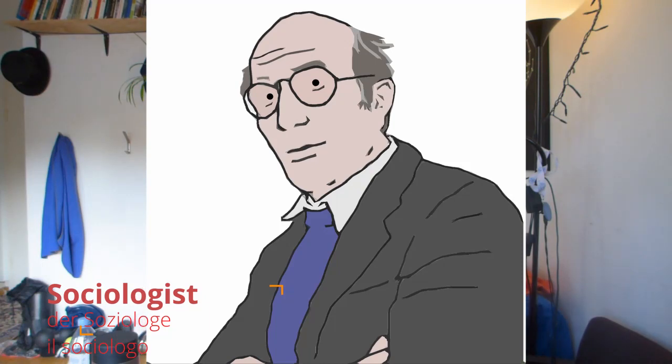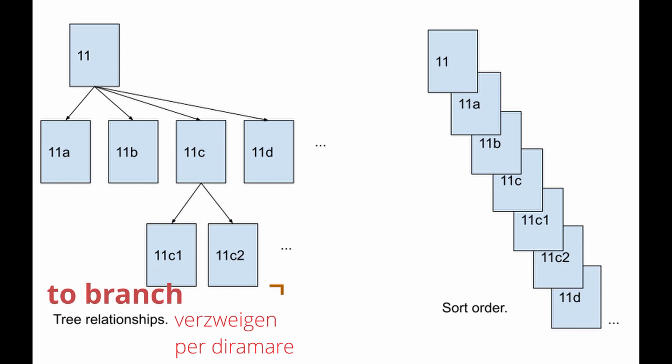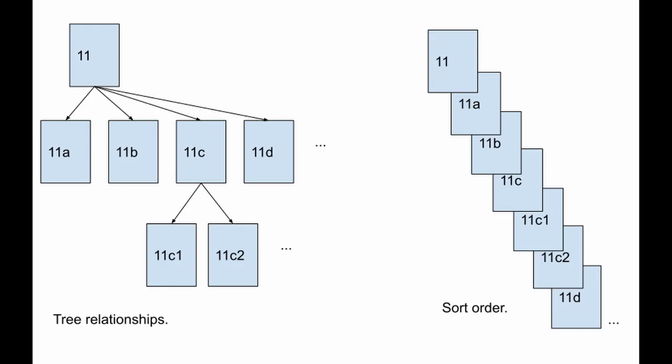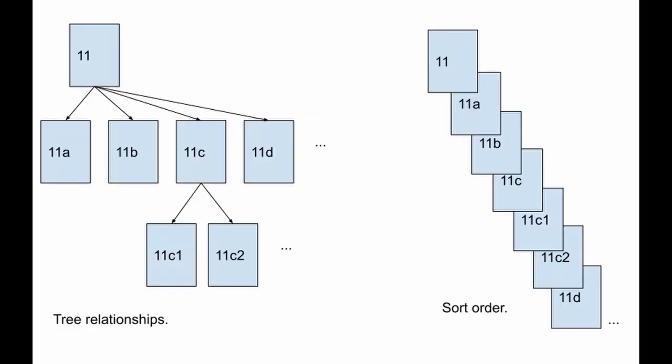Luckily, there is a solution. The German sociologist Niklas Luhmann came up with a concept called the Zettelkasten. You write your ideas on different notes and you're able to branch them and expand on them. But all of this would end up in chaos if there wasn't a good system to label them. So you start your thought in one note, called one.